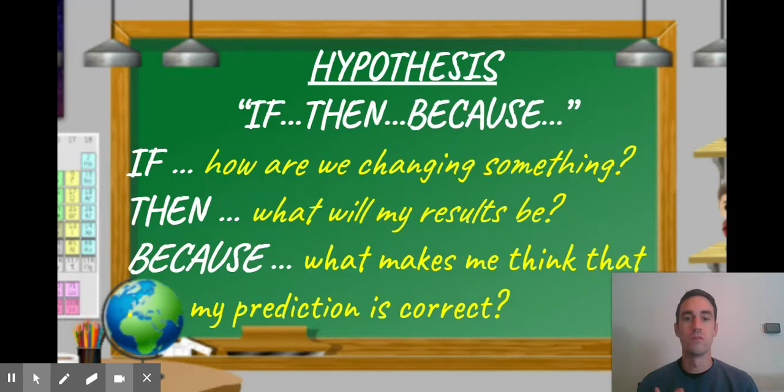The 'then' is what the result may be. This is where you're going to take what you're measuring and turn it into your actual prediction. So your 'then' is what you think is going to happen. And finally, your 'because' is what makes you think that your prediction is correct.